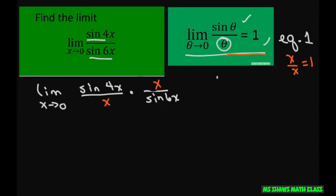Now that I've done that, I can split this up and write the limit as X approaches 0 of sine of 4X divided by X, times the limit of X approaches 0 of X divided by sine of 6X.